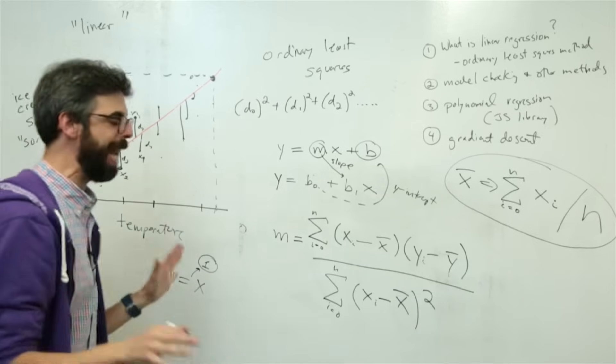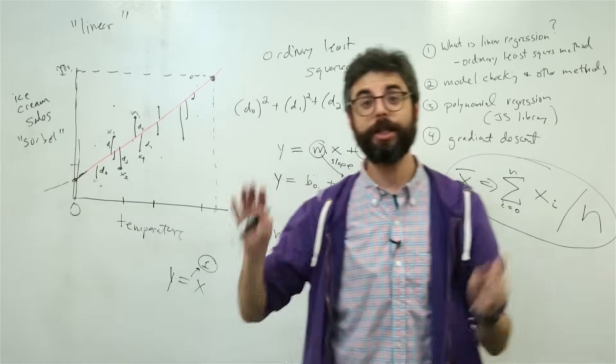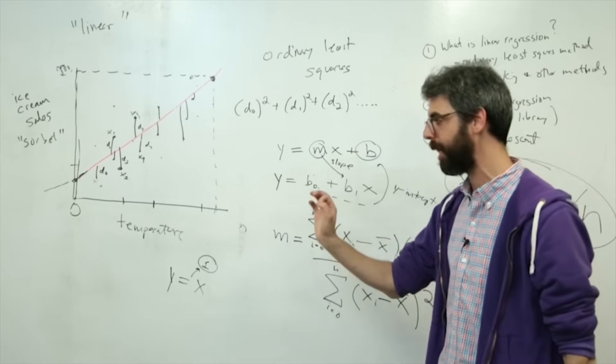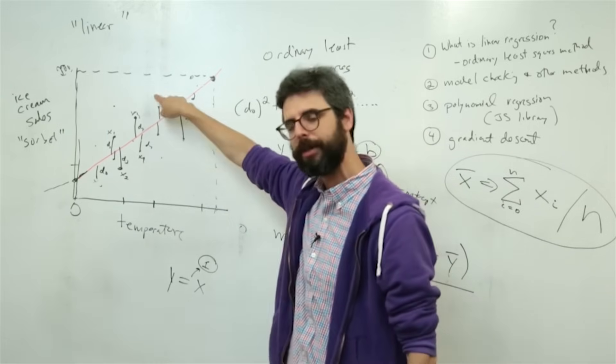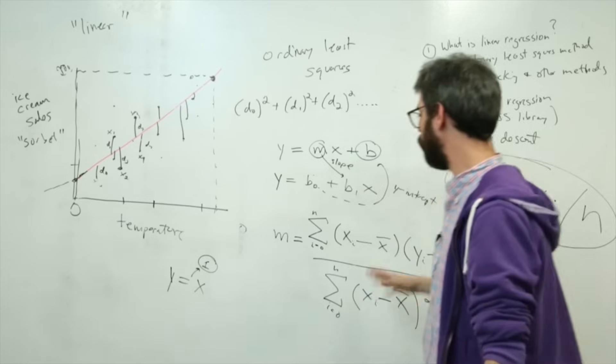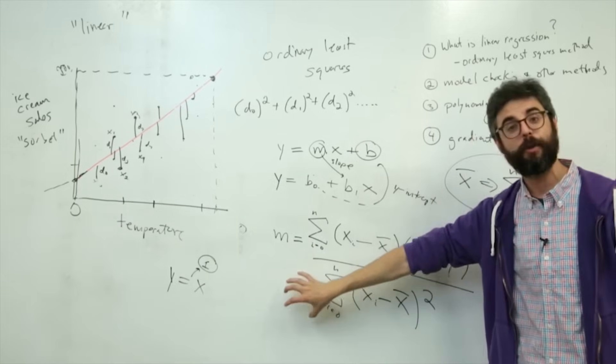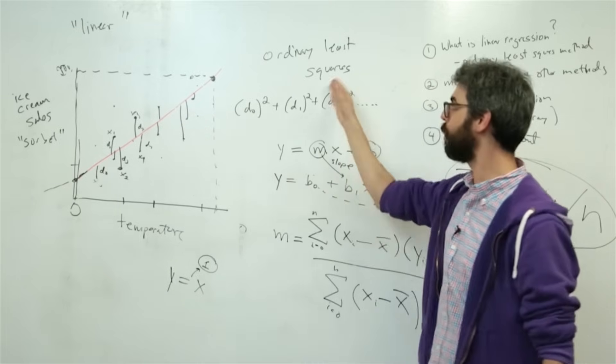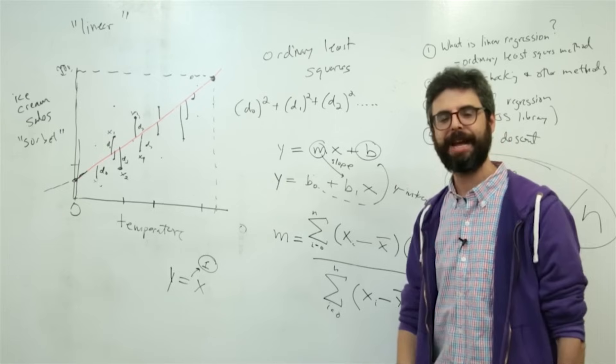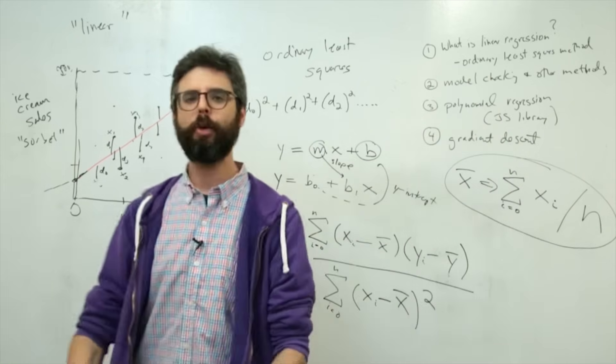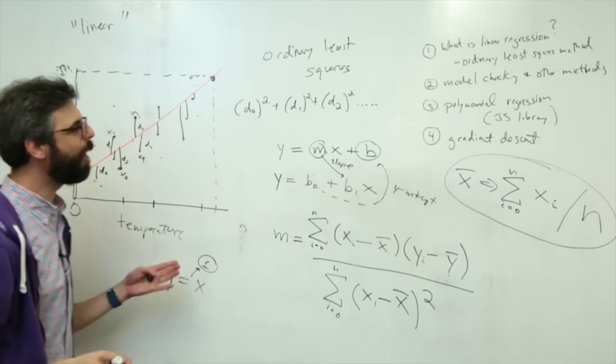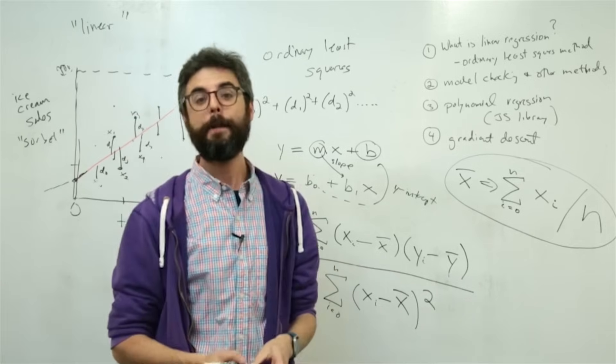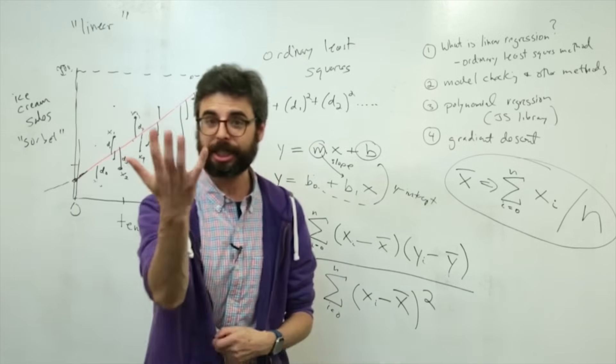So this is really it. So what I want to do now, I want to do this in the next video, is I want to program this. So I think what I'll do is I'll program it in such a way where a user can click and add data points. And each time the user clicks, I will implement this formula and draw the line of best fit according to the ordinary least squares method in Canvas in the browser.